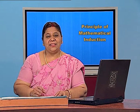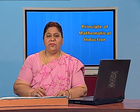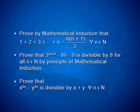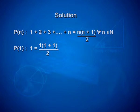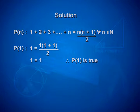Let us see the solution of one of those questions. The first one was: 1 plus 2 plus 3 plus ... plus n is equal to n into n plus 1 by 2, for every n belonging to N. First we examine p of 1: 1 is equal to 1 into 1 plus 1 by 2. Obviously, 1 is equal to 1. Therefore, p of 1 is true.